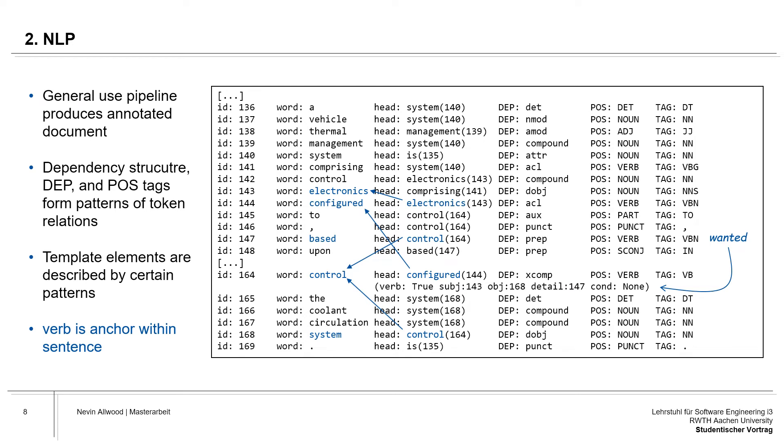It is shown that verbs, so the process verb element of a requirement, are the anchors within sentences to which most of the other elements relate.